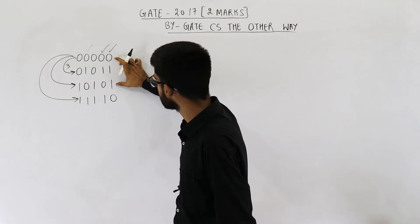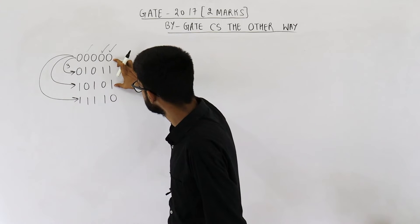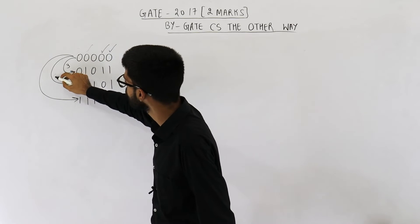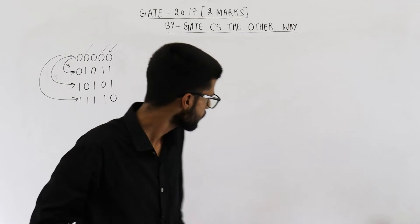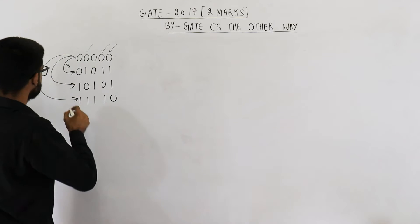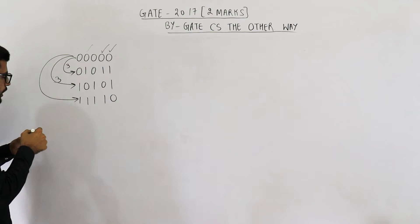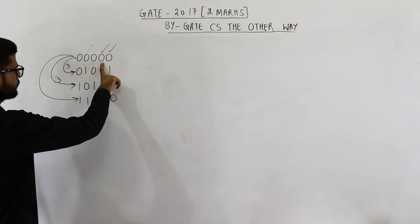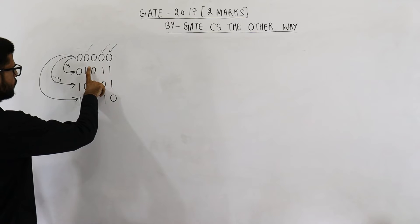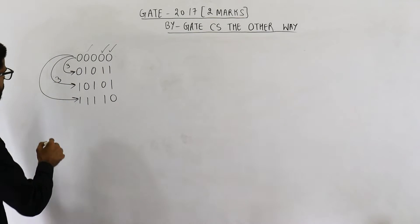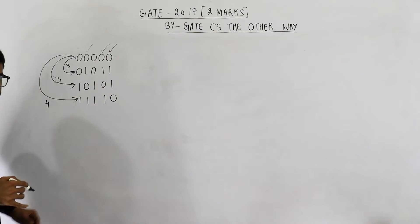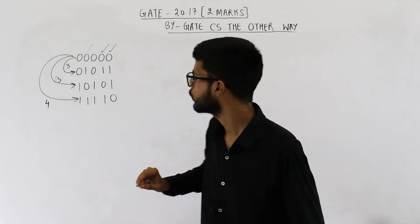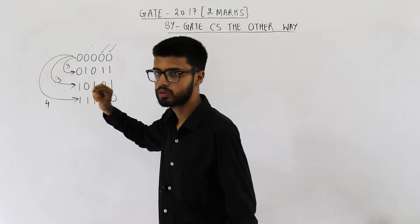Now between these two numbers, the Hamming distance will be one, two, and three — this is also three. And between these two numbers, it is one, two, three, and four — so here the Hamming distance is four. Now keep in mind, the minimum Hamming distance till now is three, because this is three, three, and four.